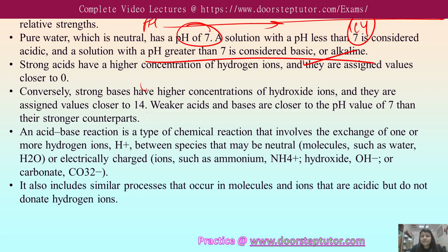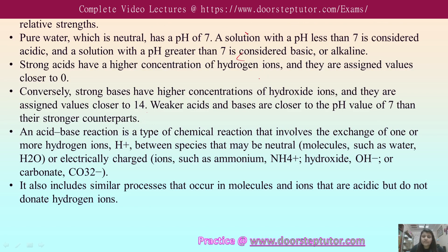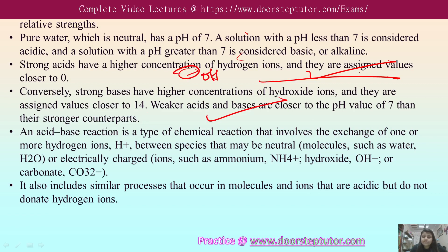Strong acids have a higher concentration of hydrogen ions and are assigned a pH value closer to zero. Stronger bases have a higher concentration of hydroxide ions and are assigned a value closer to 14. Weaker acids and bases have pH values nearer to 7 compared to their stronger counterparts.